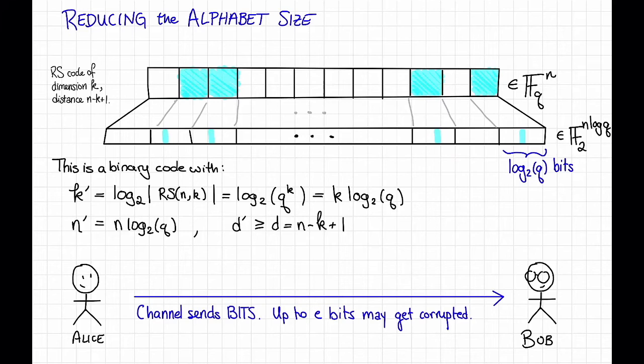Now let's calculate the rate and the relative distance of this new binary code. The new rate, r prime, is equal to k prime divided by n prime. That's k log q divided by n log q. The log q's cancel, and this is just k over n, which was the rate of the original code. So the rate stays the same.